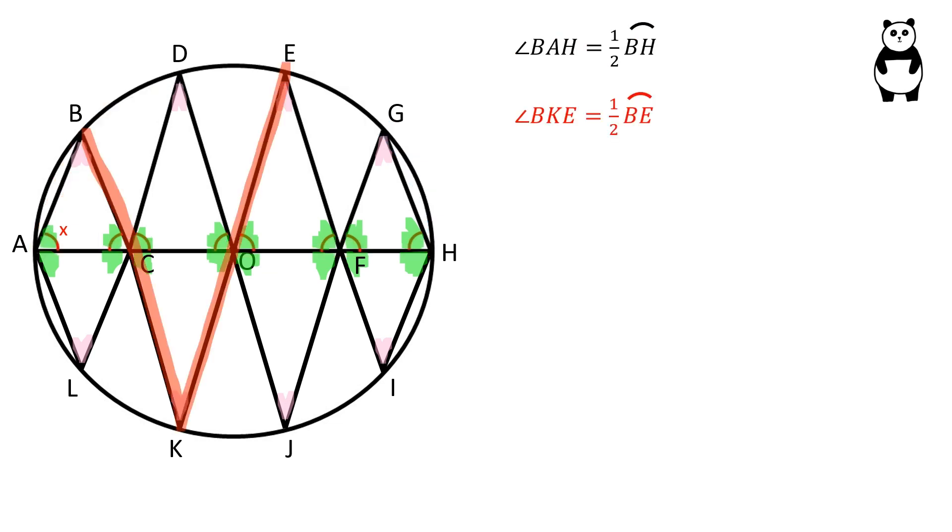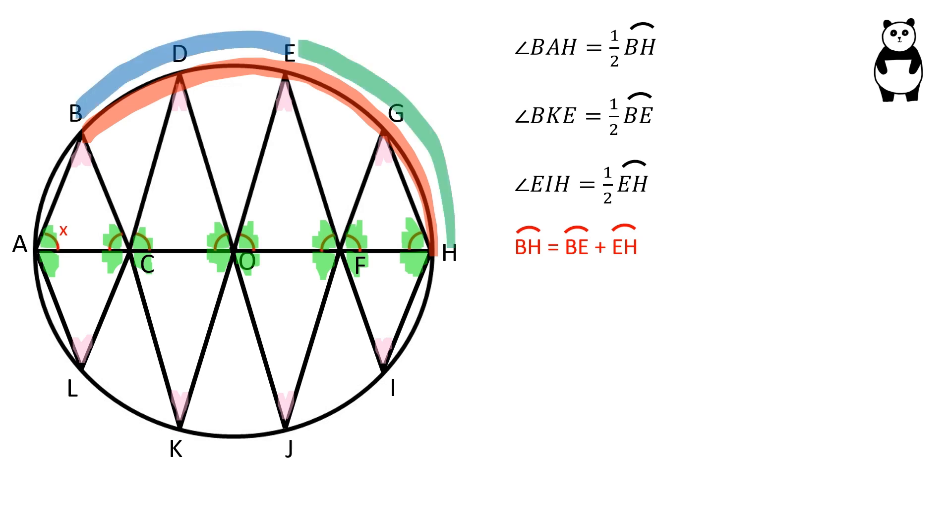Angle BKE is half the value of arc BE, and angle EIH is half the value of arc EH. Arc BH is equal to the sum of arcs BE and EH.